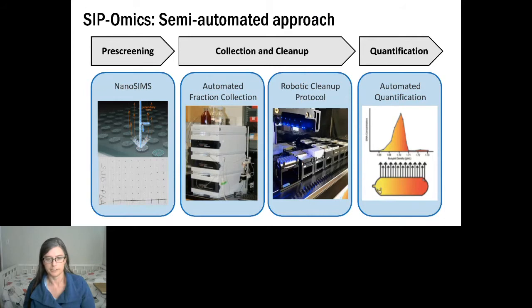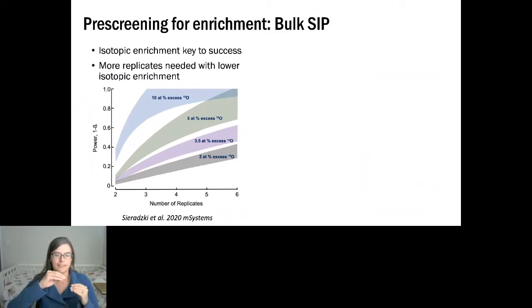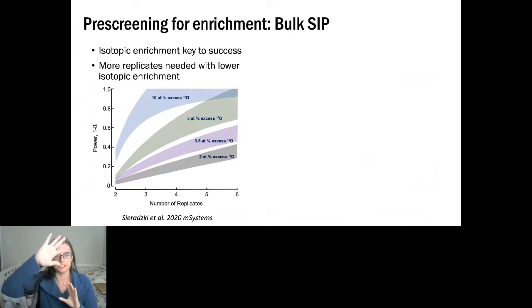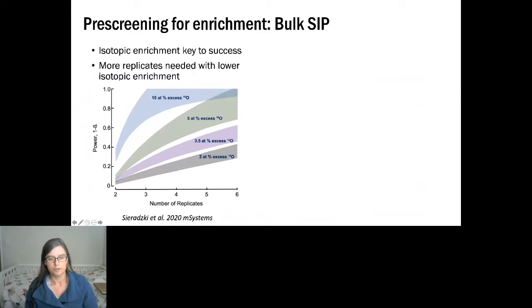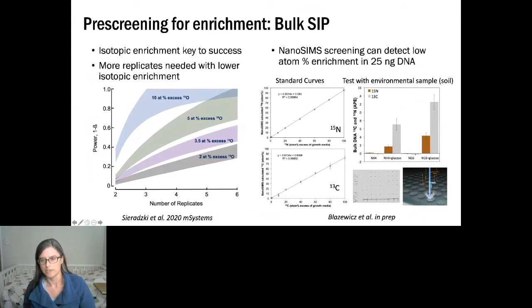A key consideration for SIP experiments is how much isotope is actually in your DNA. The density gradient I showed was a best-case scenario — normally it's more of a smear. As shown in a recent paper, the number of replicates needed depends heavily on how enriched the DNA is. With highly enriched DNA at 10 atom percent excess 18O, three replicates work well, but at 2 atom percent excess, even six replicates may not be sufficient.